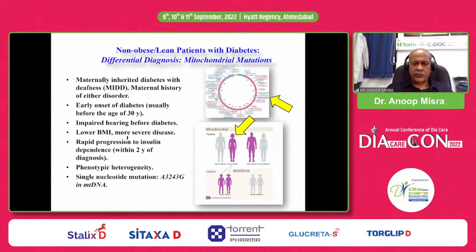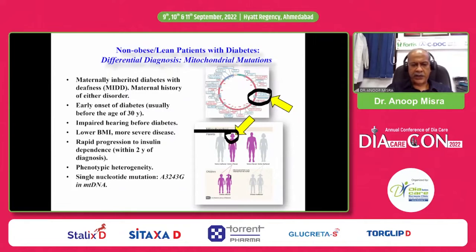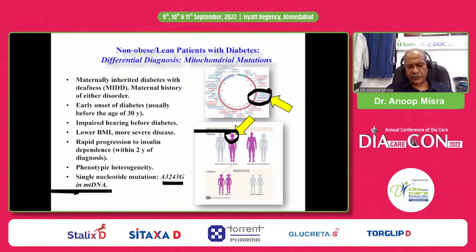MELAS syndrome — mitochondrial mutation — is maternally inherited diabetes with deafness. If the mother carries the gene, children may carry it. There is early onset of diabetes with impaired hearing before diabetes onset, lower BMI, more severe disease with rapid progression to insulin dependence, and phenotypic heterogeneity with a mutation in this particular locus.